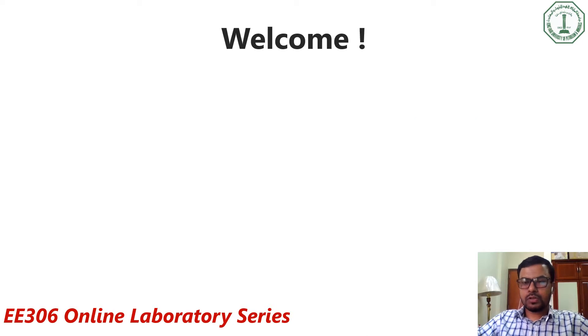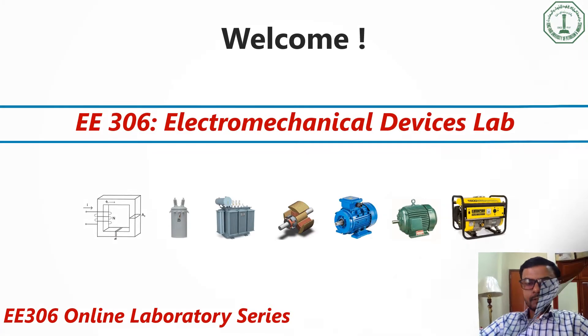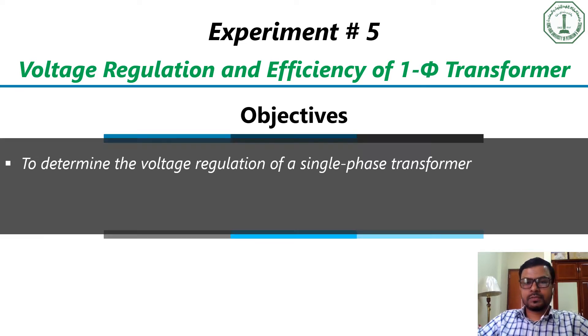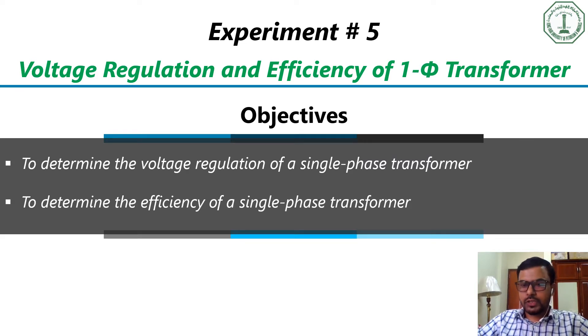Hello, welcome back to our online lab series. In this video, we will be demonstrating experiment number 5. The name of the experiment is voltage regulation and efficiency of a single phase transformer. In this experiment, we have two objectives. Our first objective is to determine the voltage regulation of a single phase transformer, whereas the second objective is to determine the efficiency of a single phase transformer.